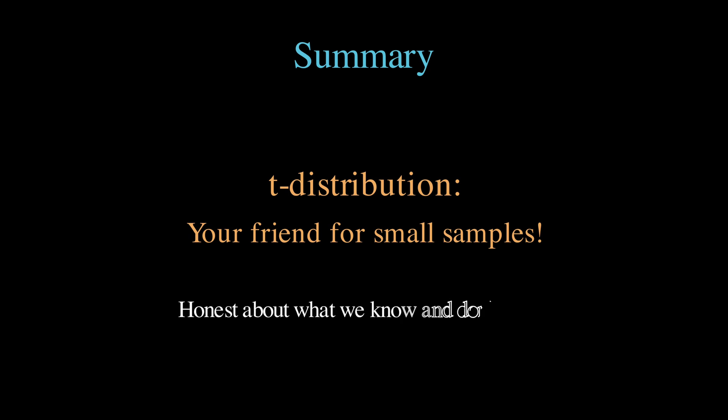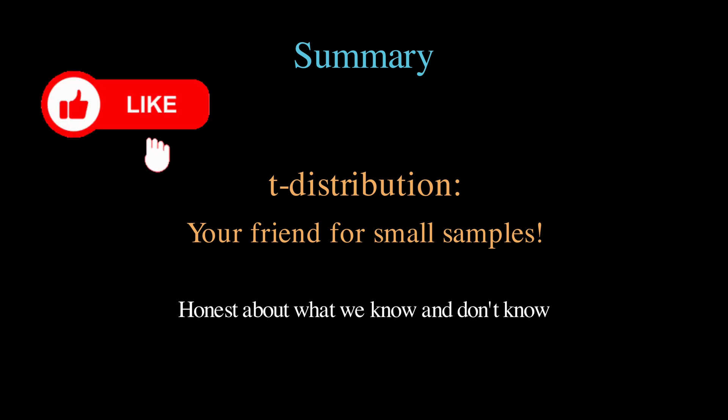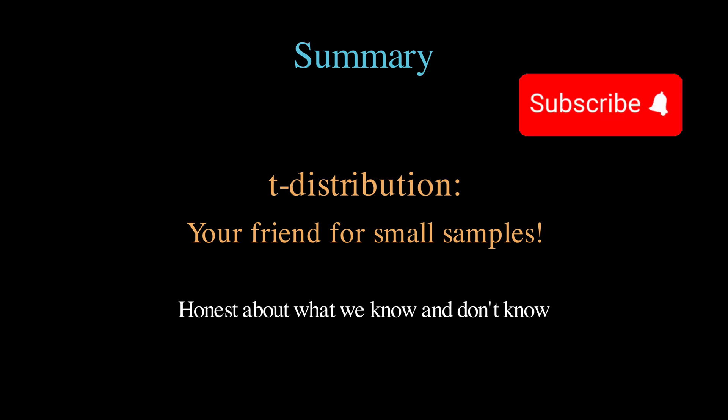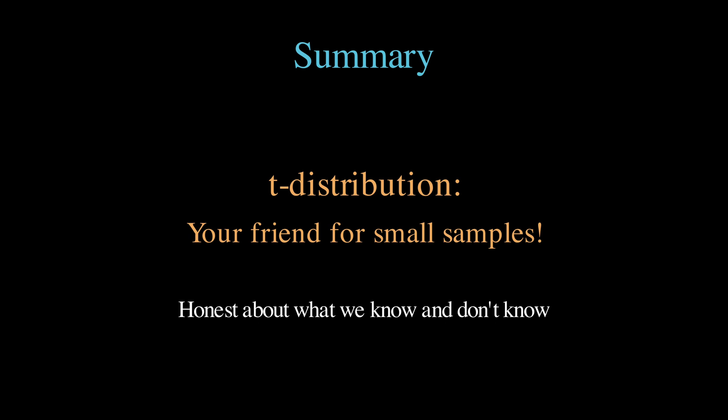So, the next time you see a confidence interval, or a hypothesis that mentions t instead of z, you'll know that someone is being appropriately careful about the uncertainty in their estimates, and that's really what good statistics is all about, being honest about what we know and what we don't know. And that's basically it for this video, thanks for watching, please leave a like if you enjoyed this explanation, share your thoughts in the comments below, and subscribe to be up to date with the content I create on this channel. See you next time, bye bye!